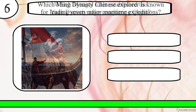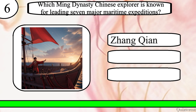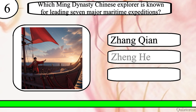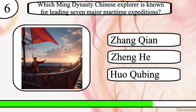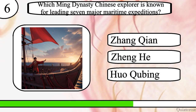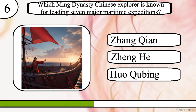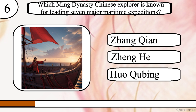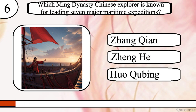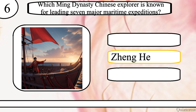Question 6. Which Ming dynasty Chinese explorer is known for leading seven major maritime expeditions? Zhang Qian, Zheng He, or Huo Qubing? The correct answer is Zheng He.